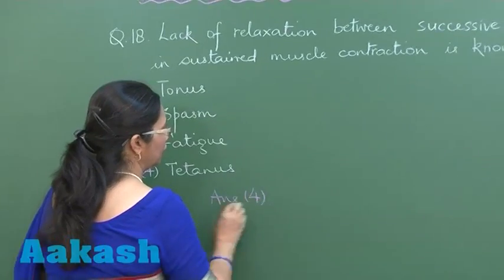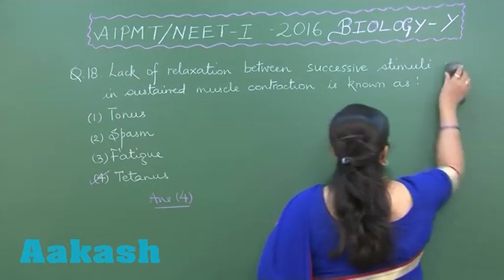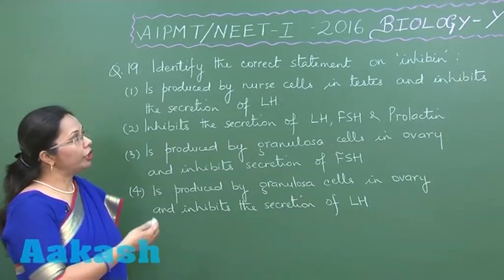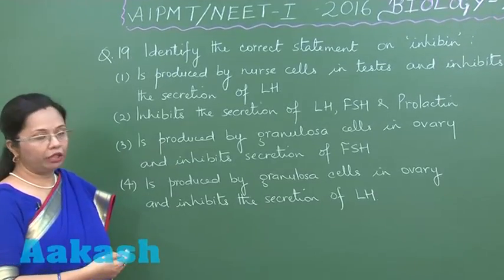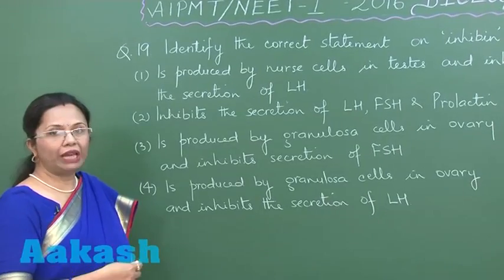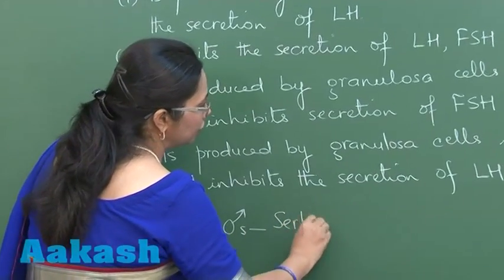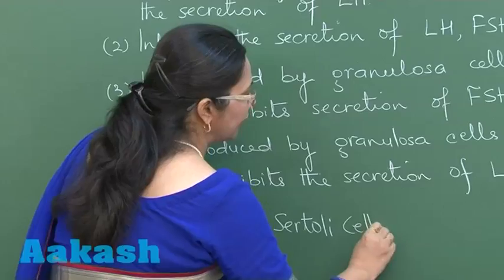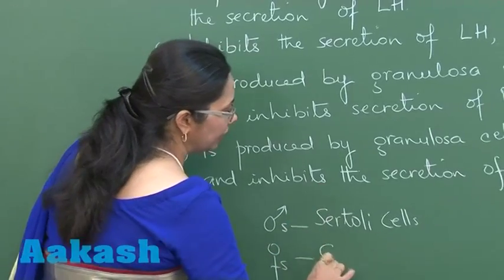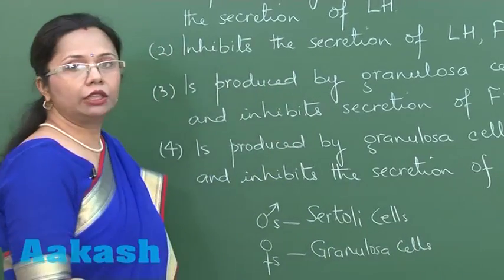Moving on to question 19, we have to select a correct statement about inhibin. Inhibin is a peptide hormone secreted in both males and females. In males it is secreted by the Sertoli cells located in the testes, which are also called nurse cells. In females this hormone is secreted by granulosa cells, also called follicular cells, which surround the oocyte.